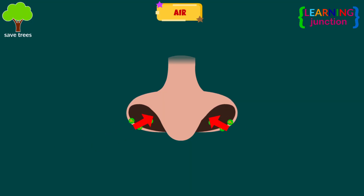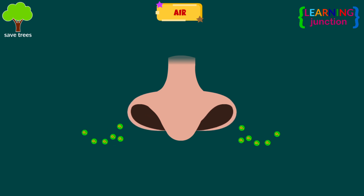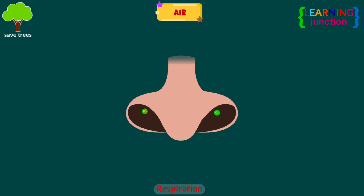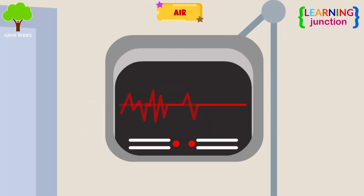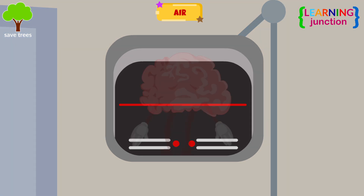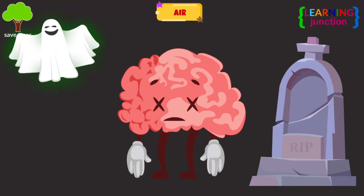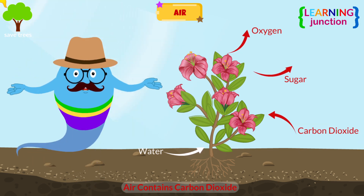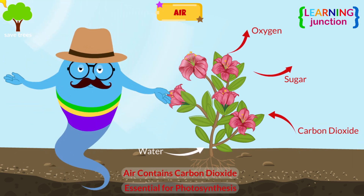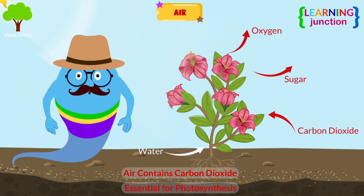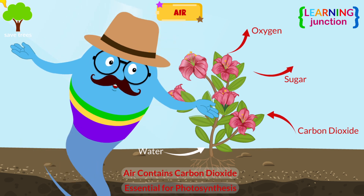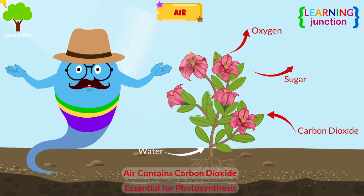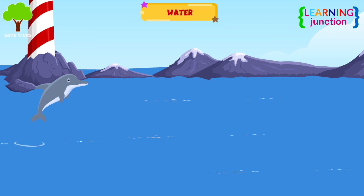Air. All living things breathe in air. Breathing is part of a process known as respiration. Without air, we cannot breathe, and life on Earth will end. Air contains carbon dioxide, which is essential for green plants to manufacture their own food by the process of photosynthesis.